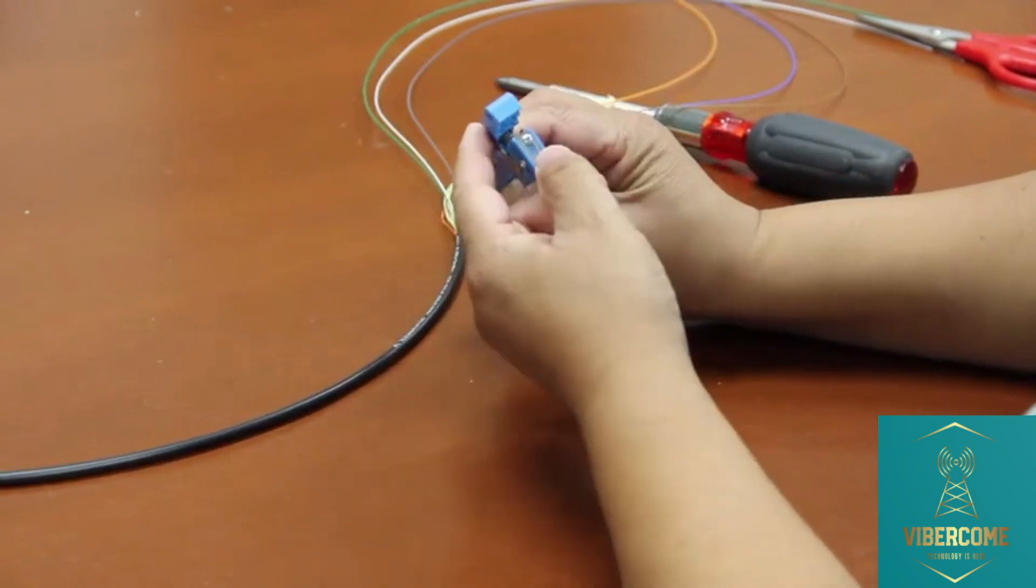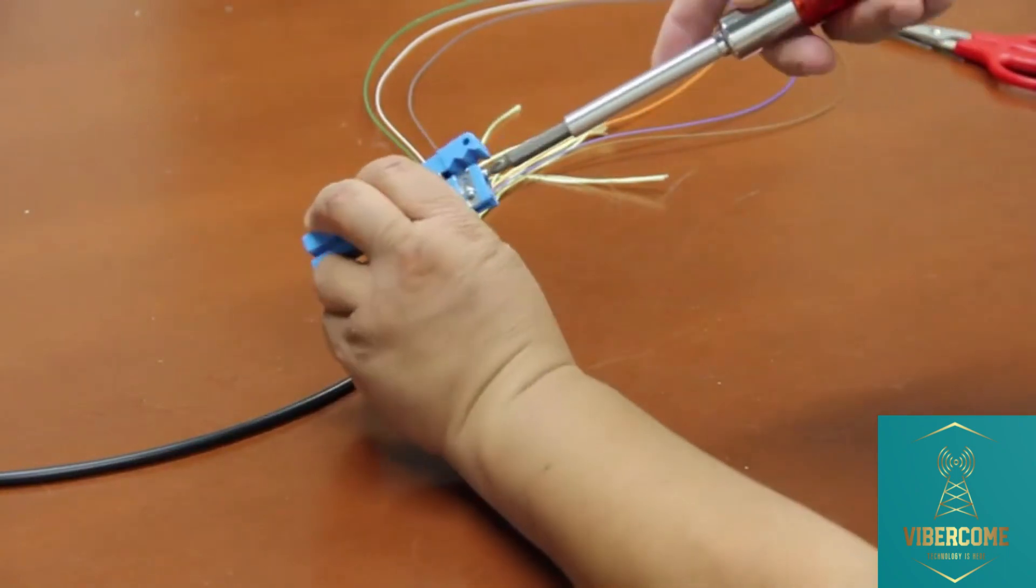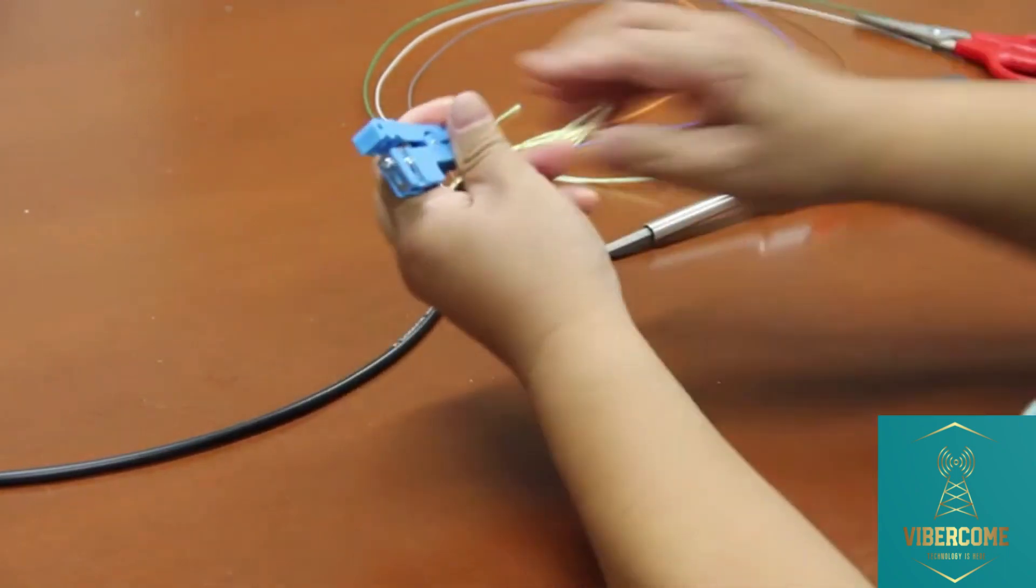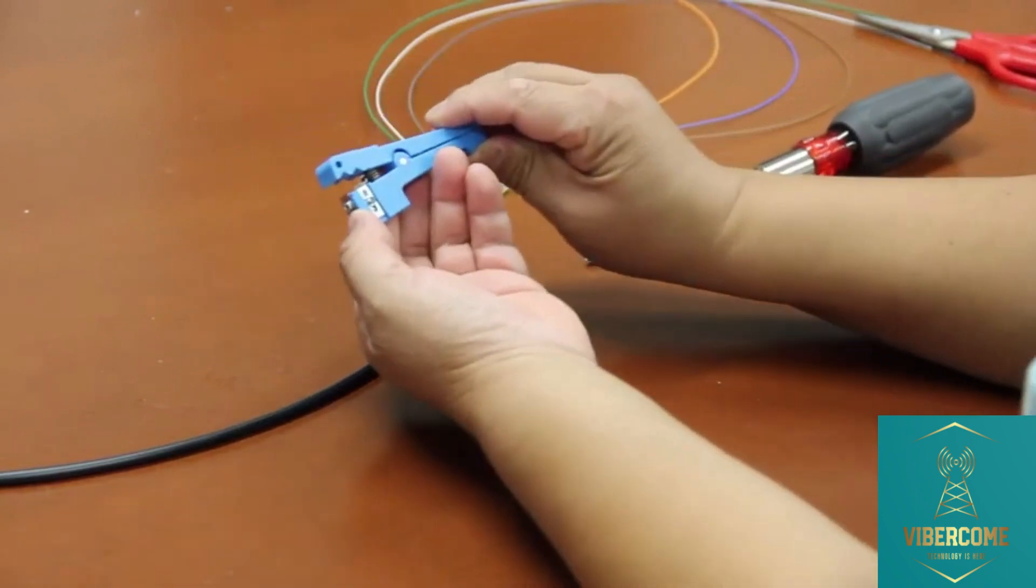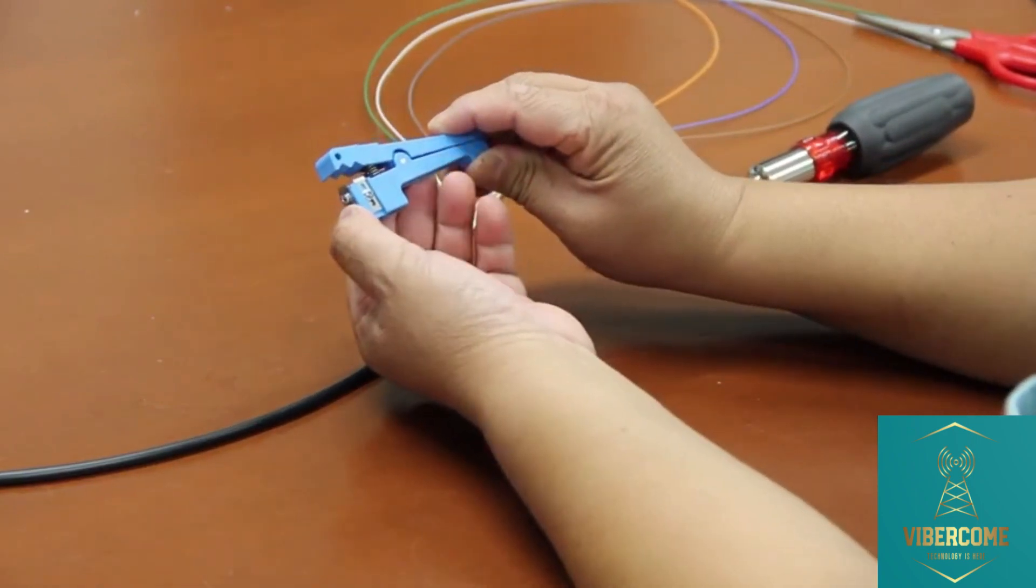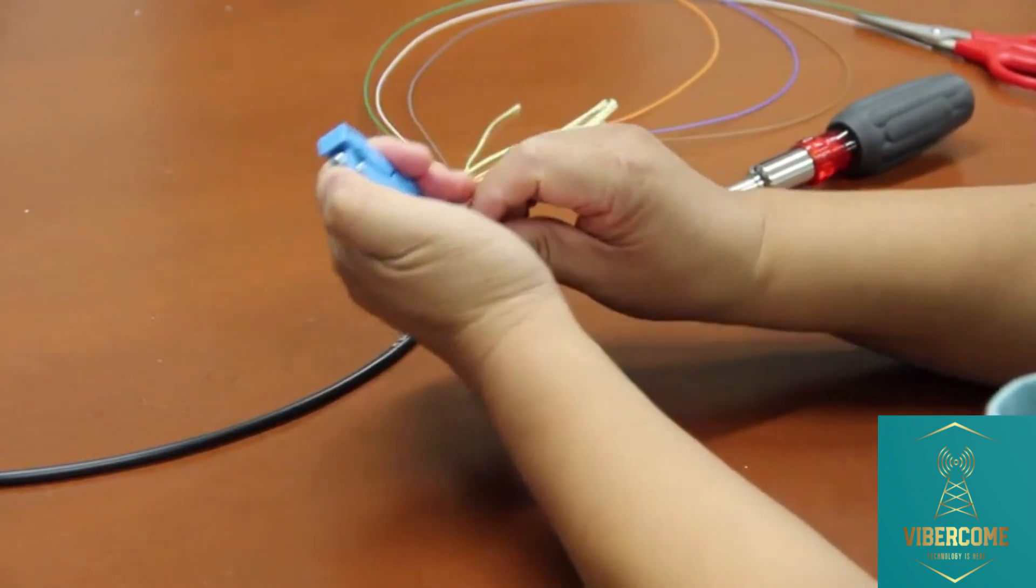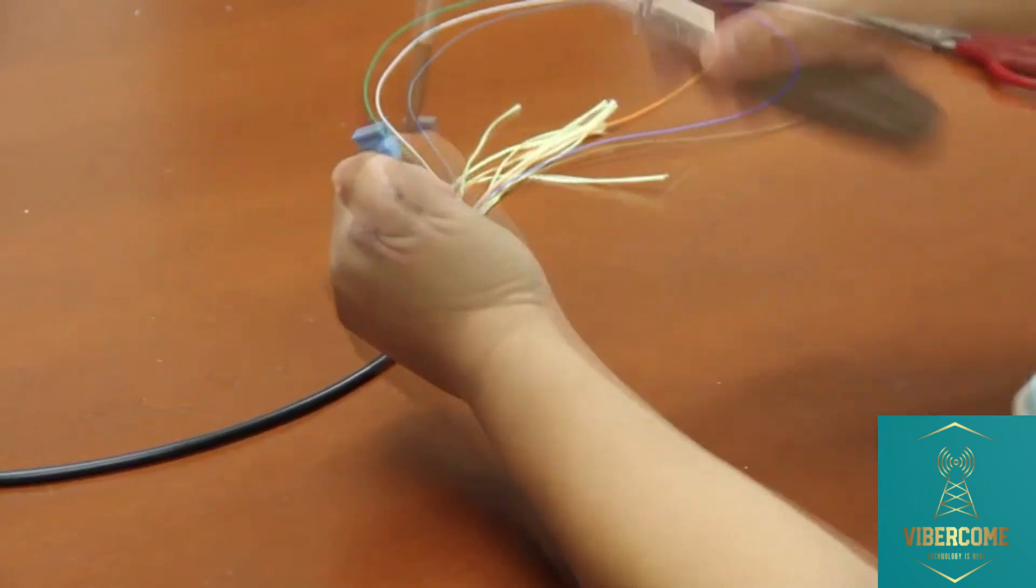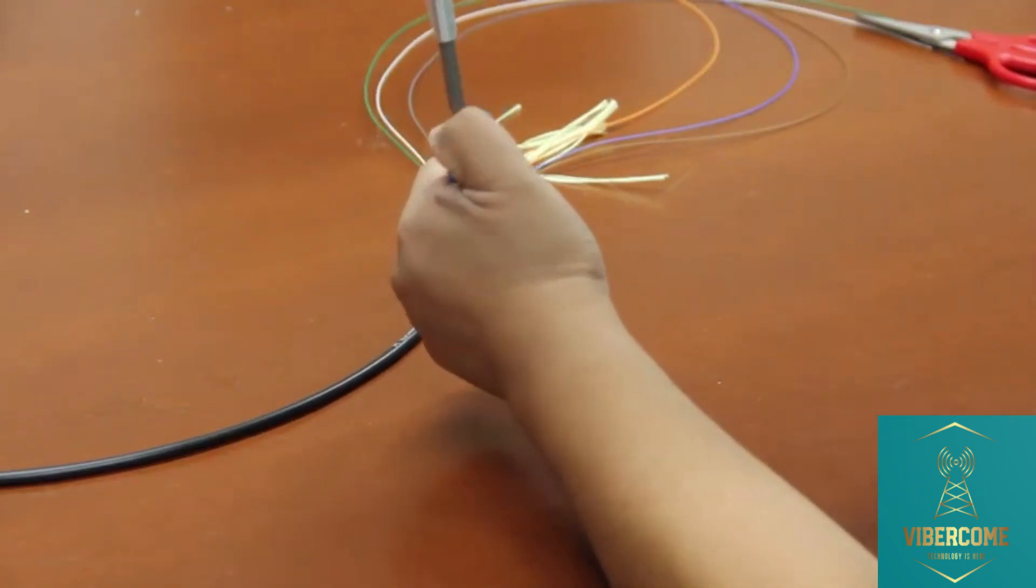Now let's do the longitudinal cut for cutting a mid-axis window within a length of buffer tube fiber cable. First, loosen the screw for the longitudinal cut blade. Adjust it to the same depth as the ring cut blade, then tighten it up.